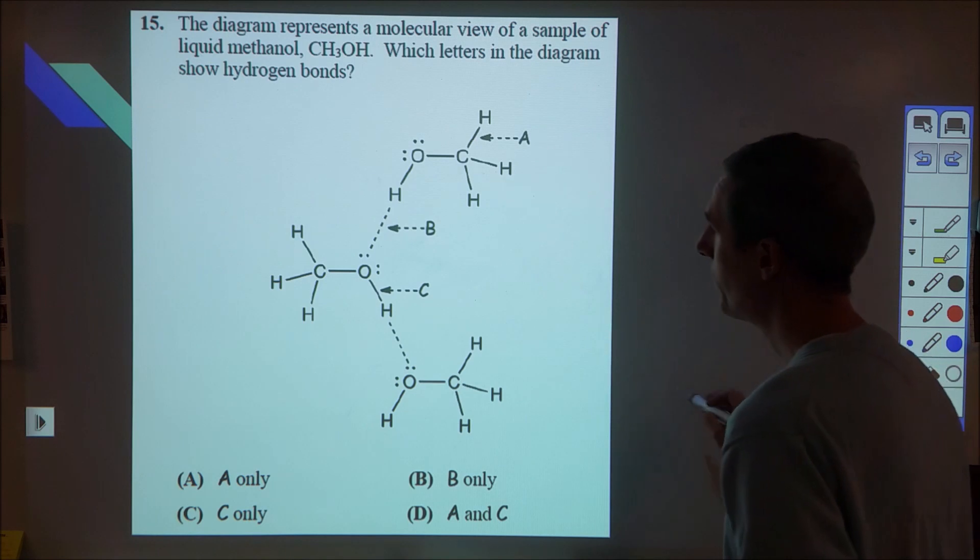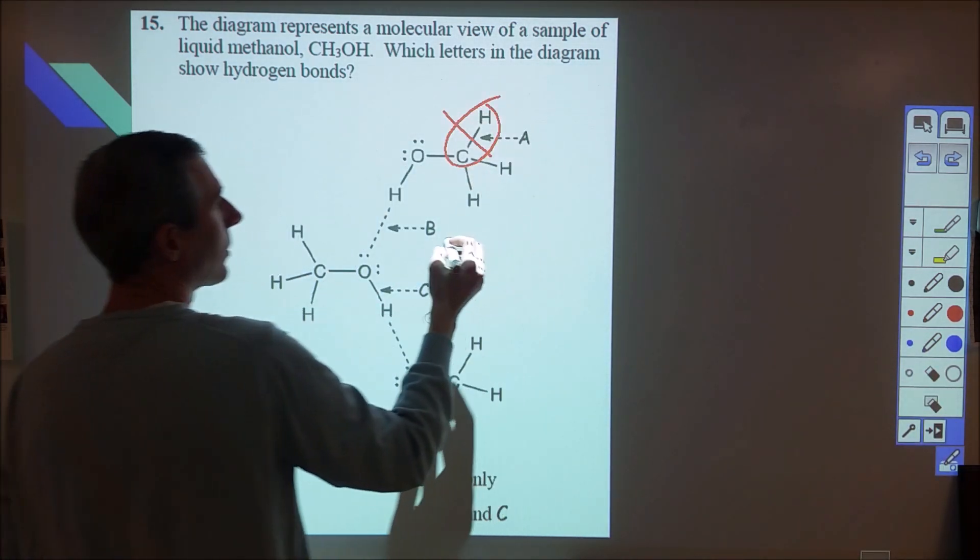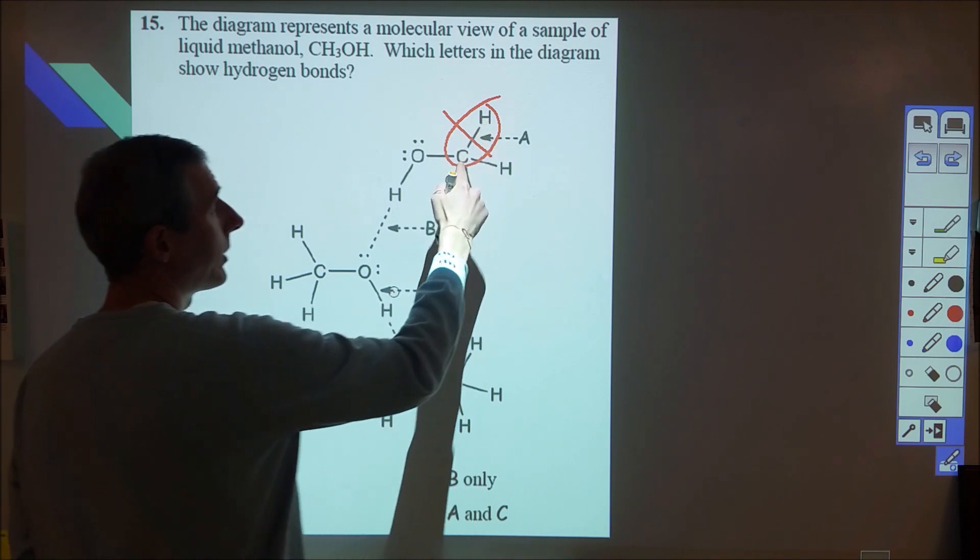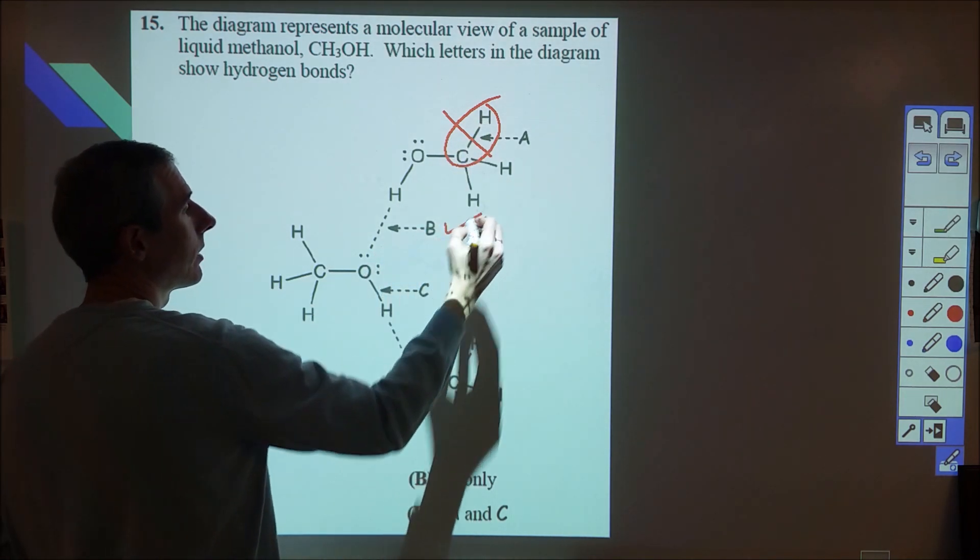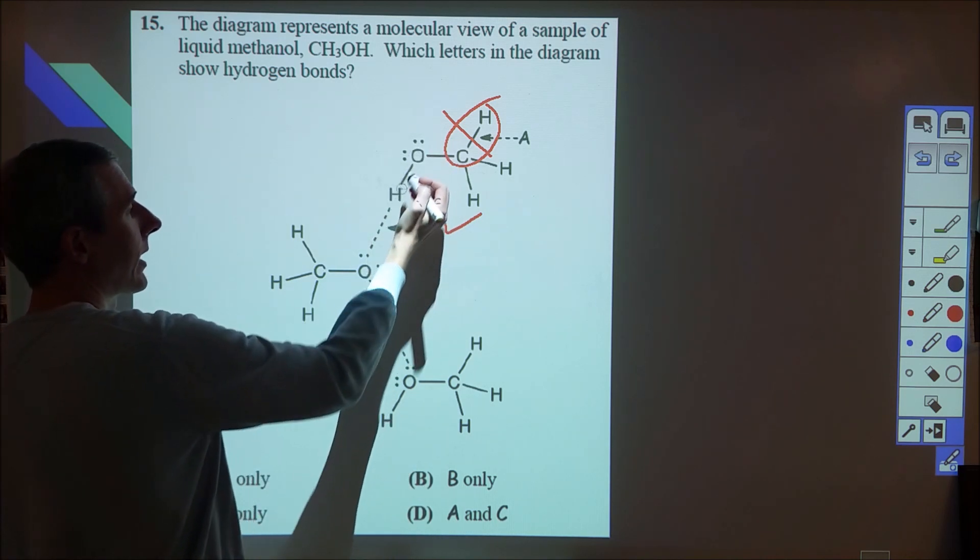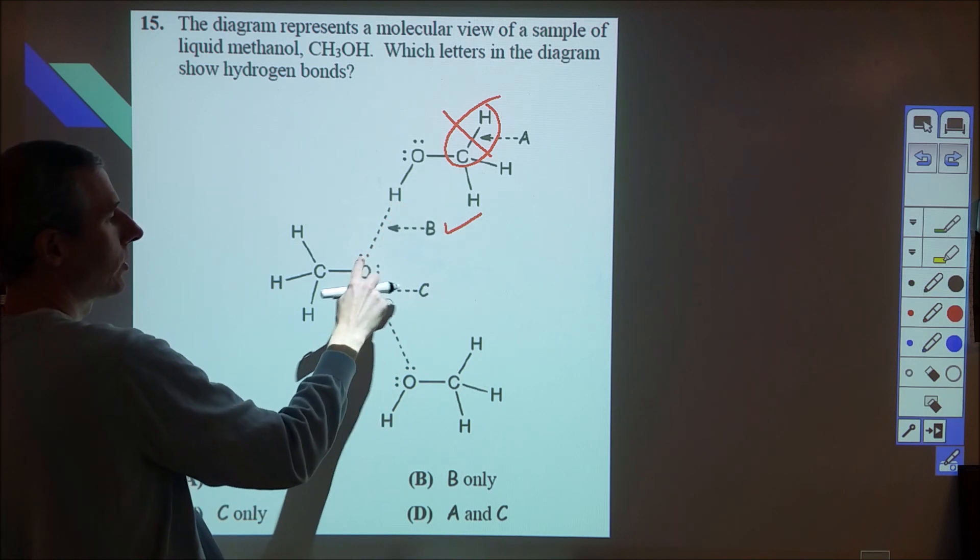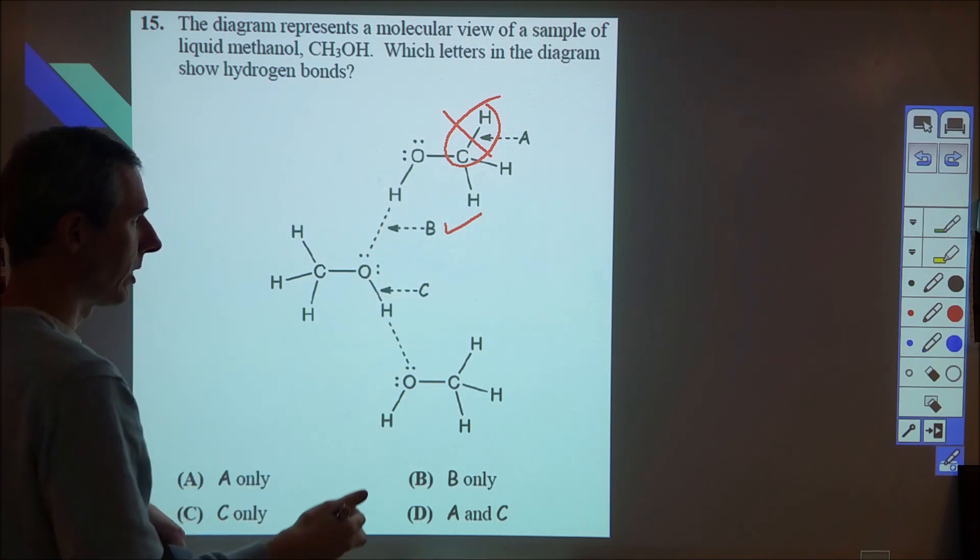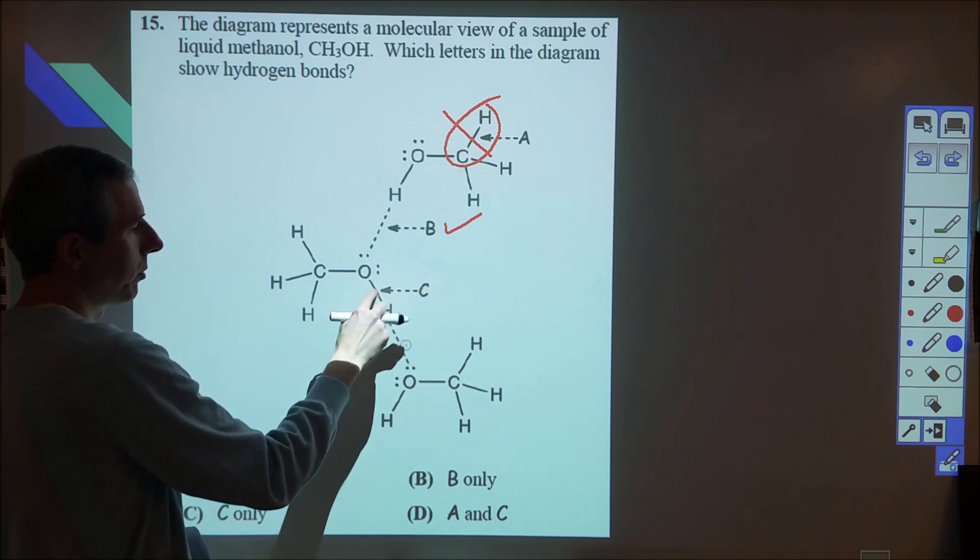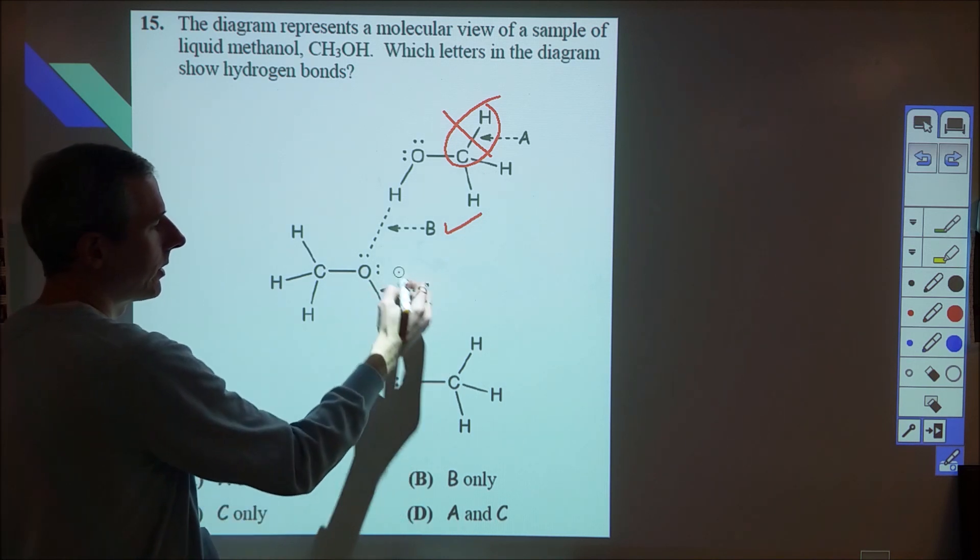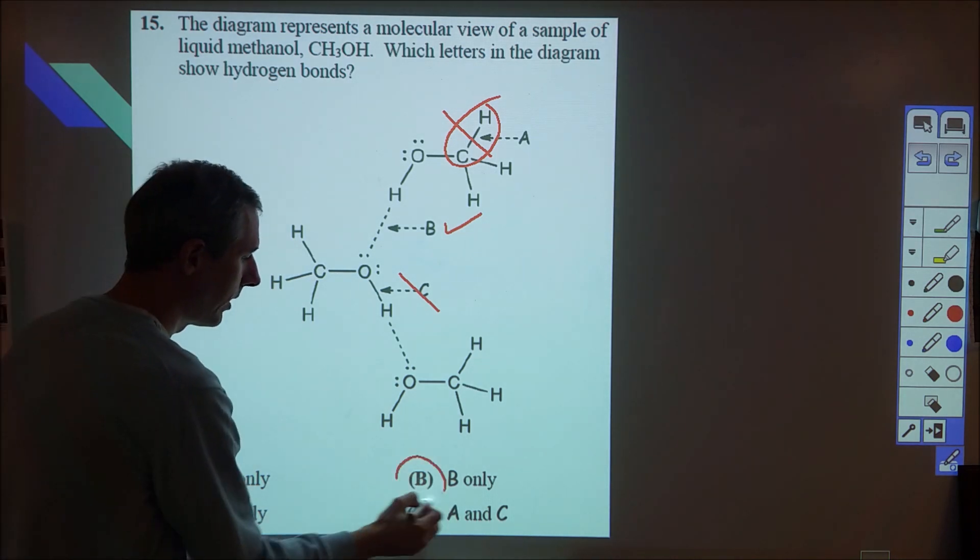Here we're looking at hydrogen bonding. This obviously is not correct because we're looking at an actual covalent bond between a carbon and a hydrogen. Here we do see a hydrogen bond – we have a hydrogen that's been polarized by its oxygen creating that bare proton effect attracted to a negatively charged portion of another molecule. In C we have a hydrogen bond here, but they're pointing to the actual covalent bond, so C is incorrect. B is our correct choice.